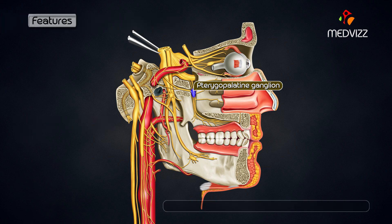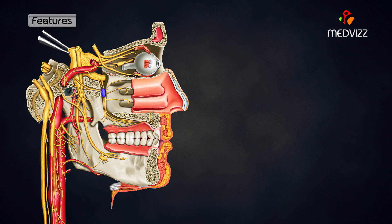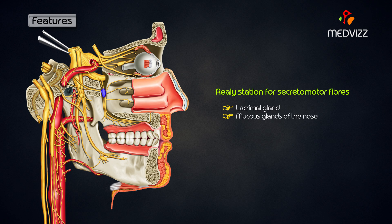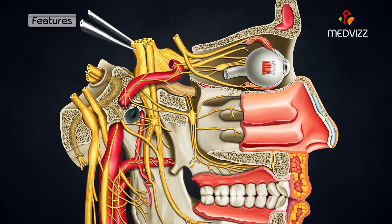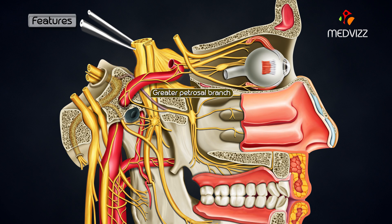Features: The pterygopalatine is the largest parasympathetic peripheral ganglion. It serves as a relay station for secretomotor fibers to the lacrimal gland and to the mucous glands of the nose, paranasal sinuses, palate and pharynx. Topographically, it is related to the maxillary nerve, but functionally, it is connected to the facial nerve through its greater petrosal branch.